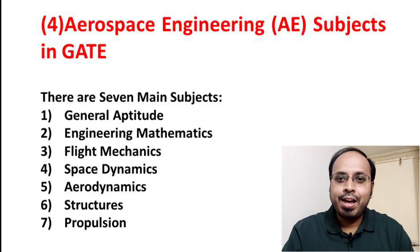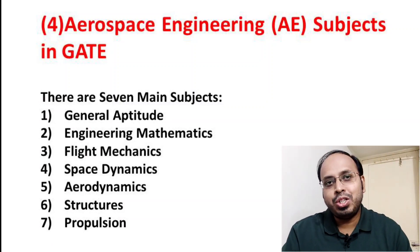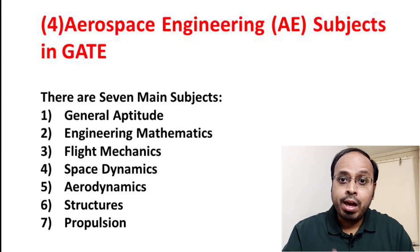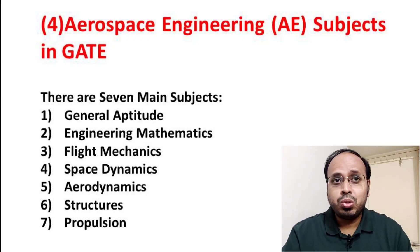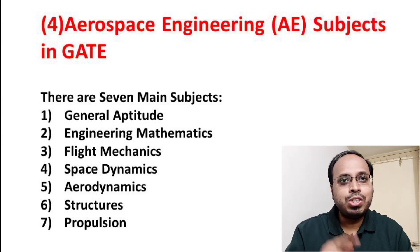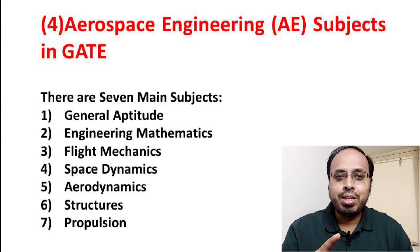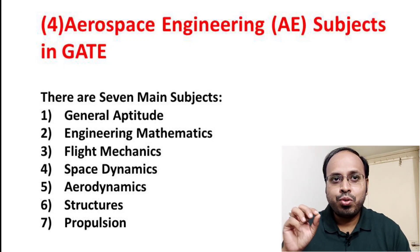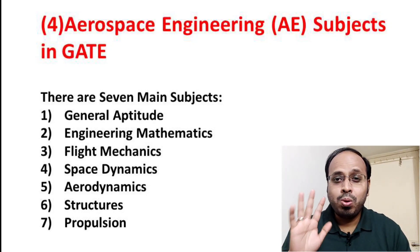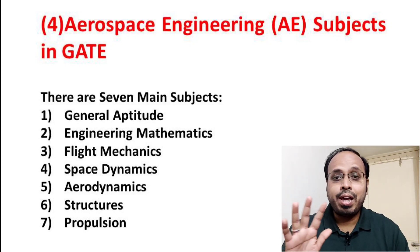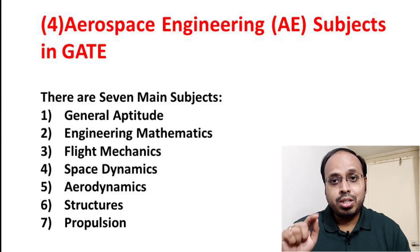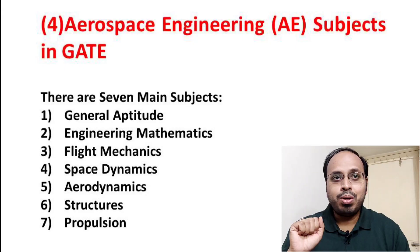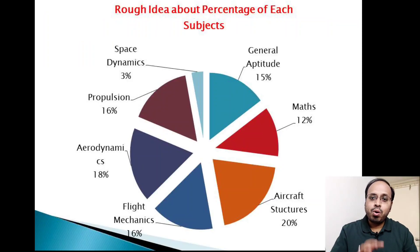The fourth point is aerospace engineering subjects in the GATE examination. There are seven main subjects: first is general aptitude, second is engineering mathematics, third is flight mechanics, fourth is space dynamics, fifth is aerodynamics, sixth is structures, and seventh is propulsion. In the pie chart you can see all seven subjects mentioned with their percentage weightage.